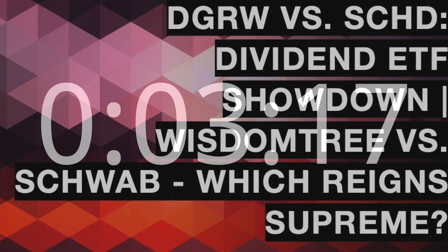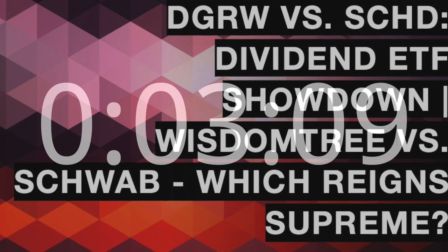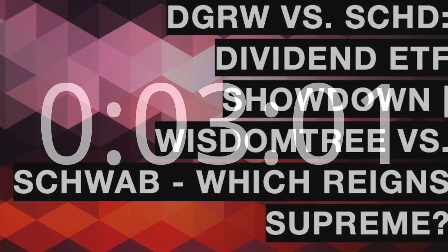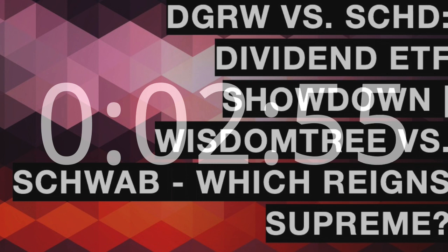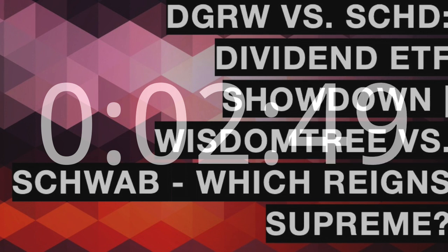DGRW's factor exposures are driven by its emphasis on quality metrics, including return on equity, earnings growth expectations, and other fundamental indicators. The fund aims to select companies with a history of stable earnings and a potential for sustained dividend growth. Investors in DGRW may find themselves exposed to factors such as quality and growth, which can contribute to a more resilient portfolio during market fluctuations.